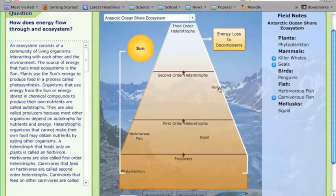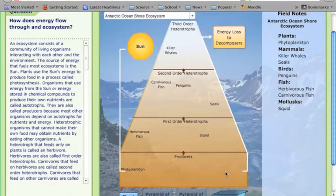Squid and herbivorous fish are first order heterotrophs or first order consumers. And then penguins, seals, and carnivorous fish are secondary consumers. And then killer whales are tertiary consumers. Now this is a real common example.